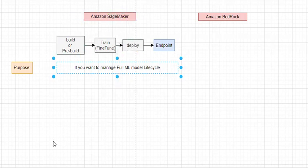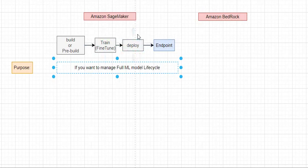In SageMaker, you can use IDEs or the studio notebooks to build or use any pre-built model. If you have a requirement to train, you can train it, then deploy it. Or you can simply take a pre-existing JumpStart model, deploy it, create that endpoint, and use it in your Lambda function for real-time purposes.